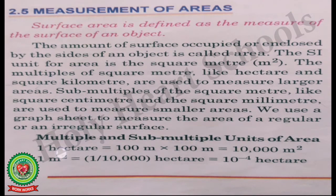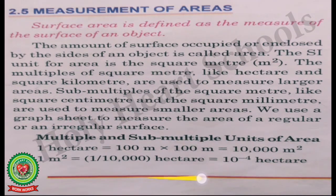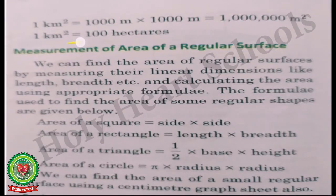Multiple and sub-multiple units of area: 1 hectare = 100 m × 100 m = 10,000 m². Students, you need to learn this. Then 1 m² = 1/10,000 hectare, or 10⁻⁴ hectares. 1 km² = 10 lakh m², and you can also write 1 km² = 100 hectares.